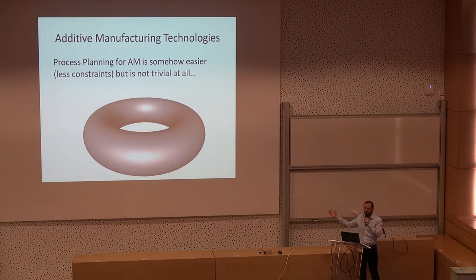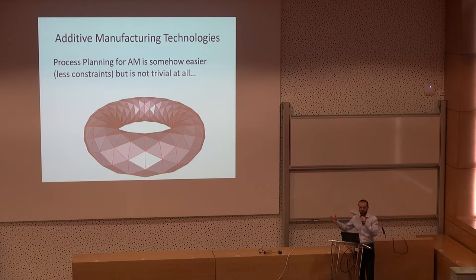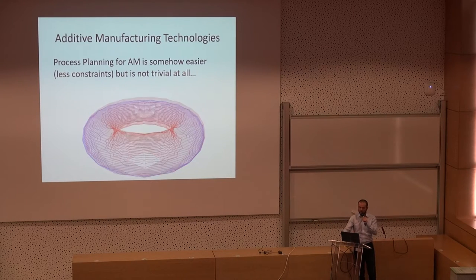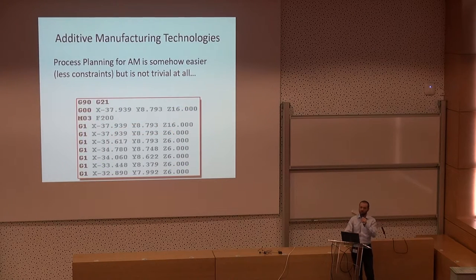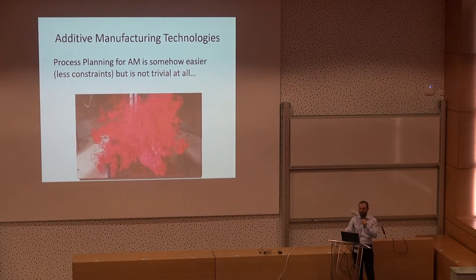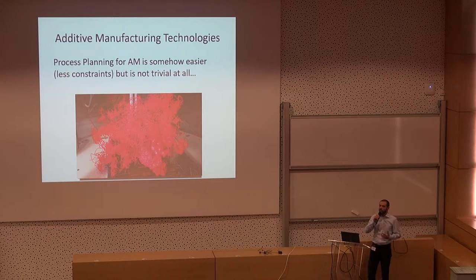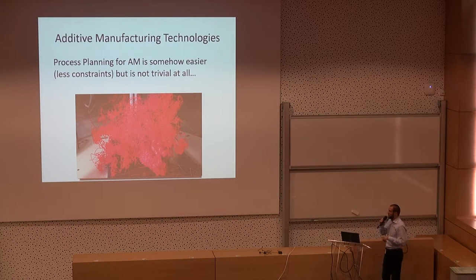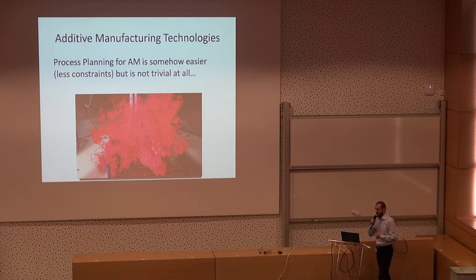The additive manufacturing process starts with a smooth CAD surface which is tessellated into a triangle mesh. From that, you produce a sequence of slices, and if all goes well you produce the G-code. Unfortunately, printing fails — and especially when printing on metal, these failures cost a lot of time and money.